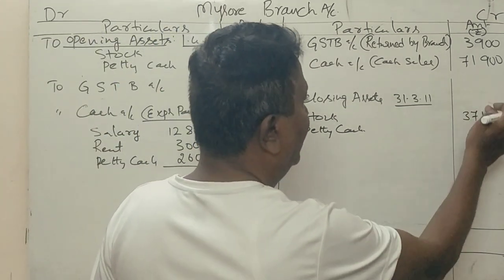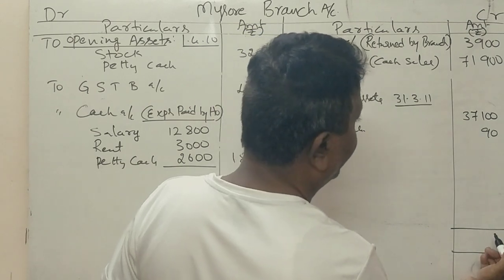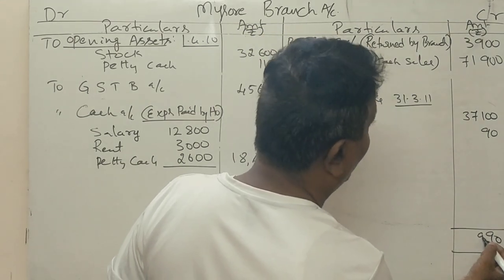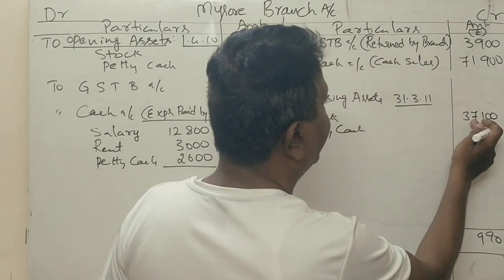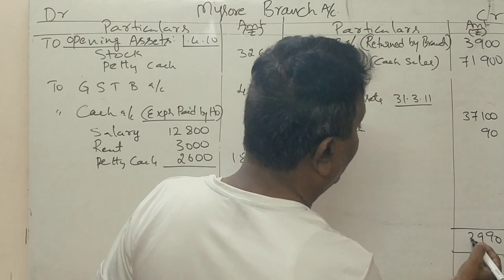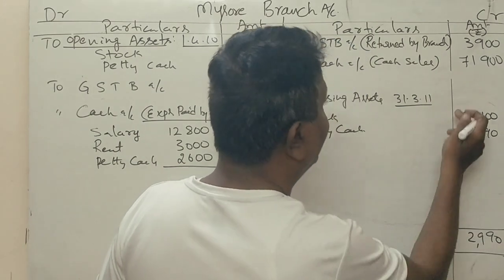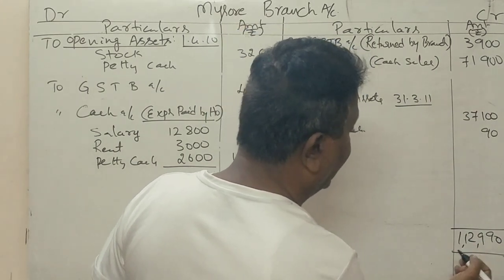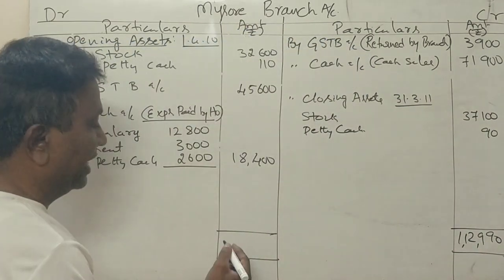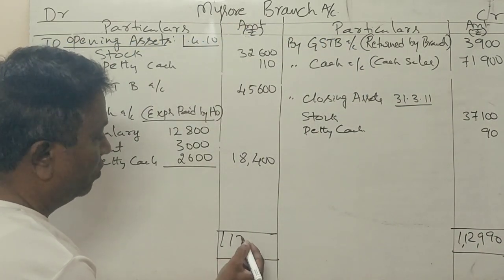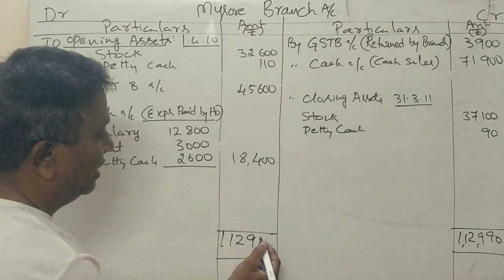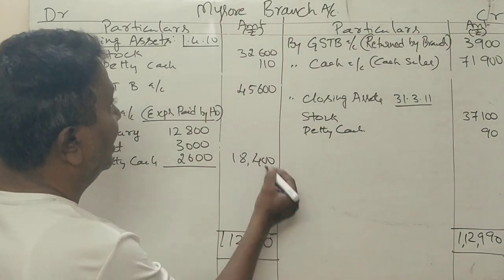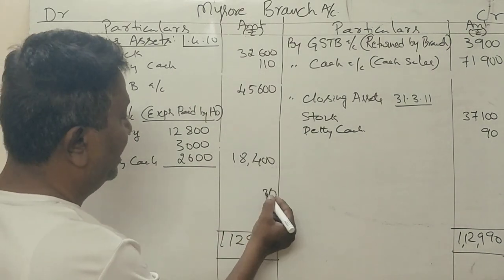Totaling both sides of the branch account gives us 1,12,000 rupees approximately on each side. The balancing figure represents the profit transferred to the profit and loss account.